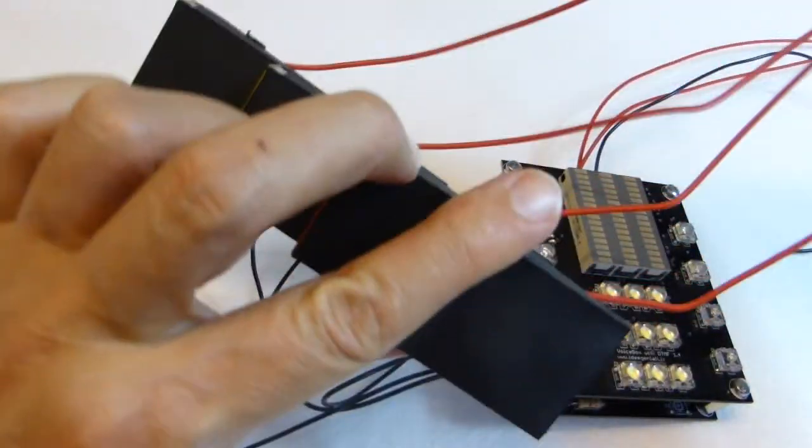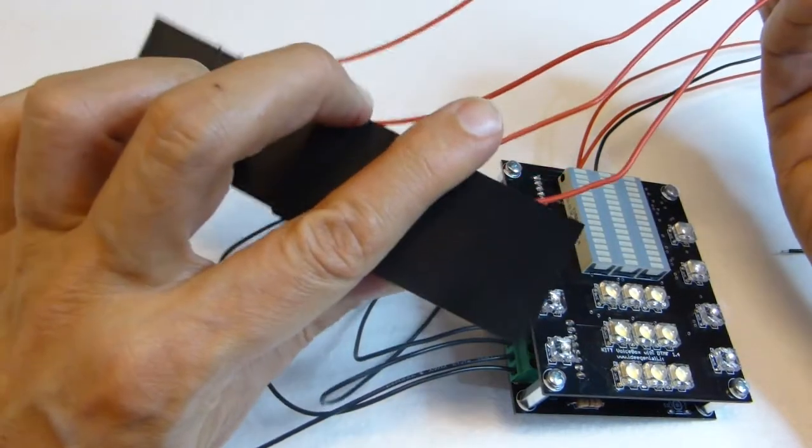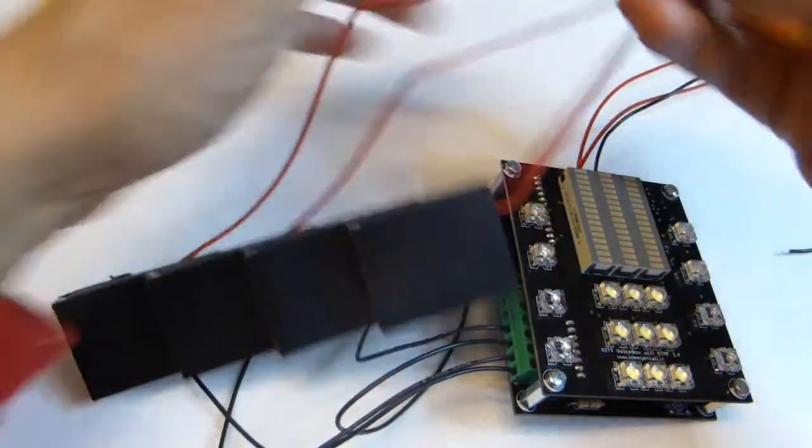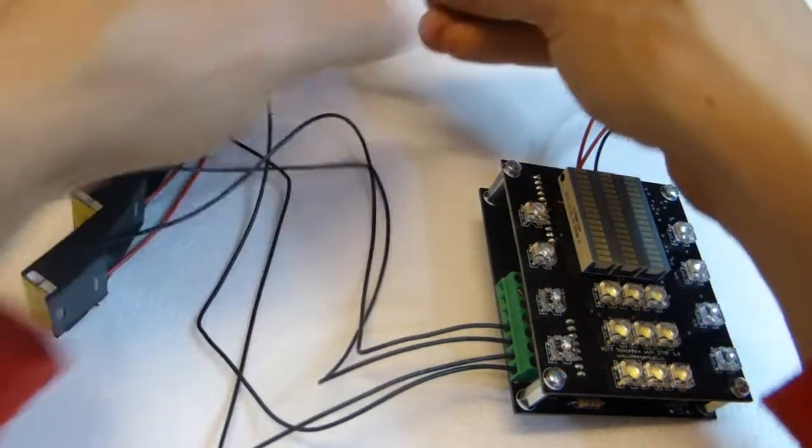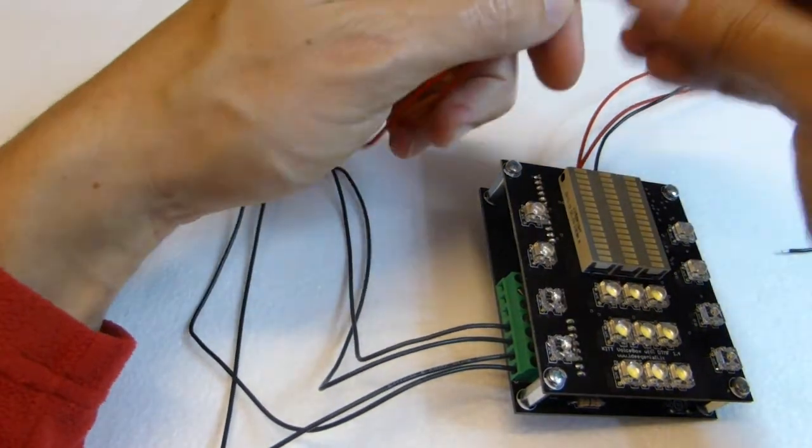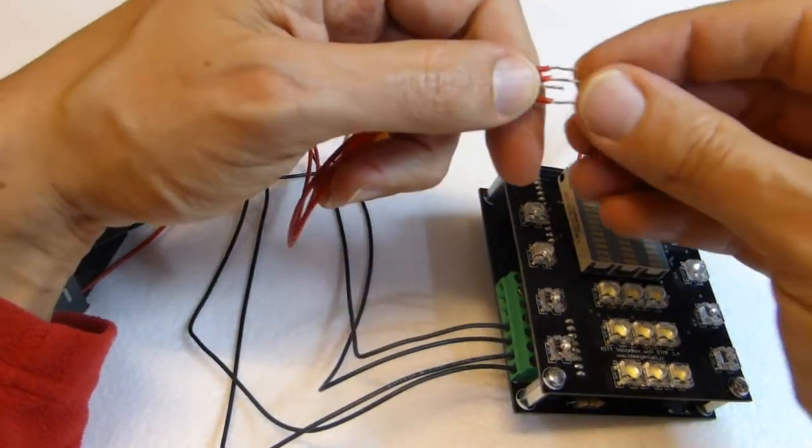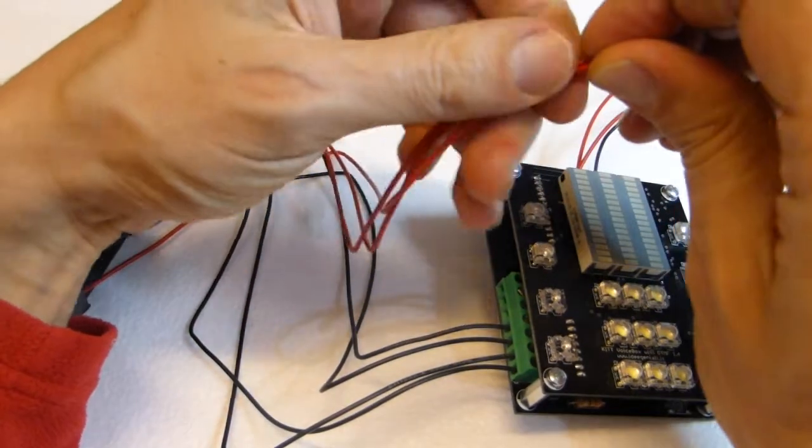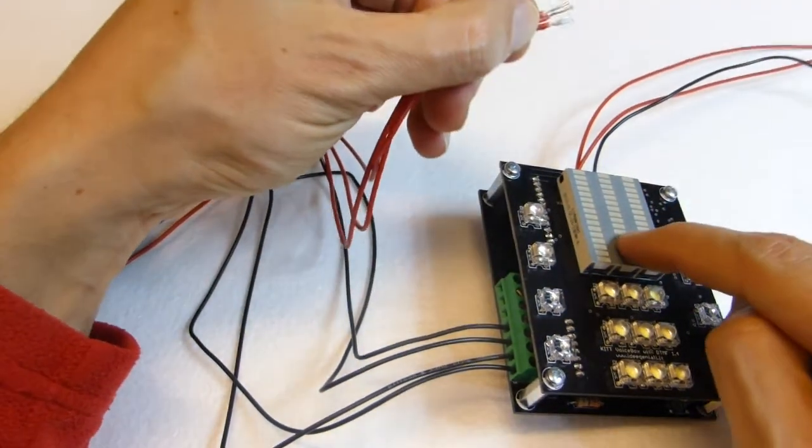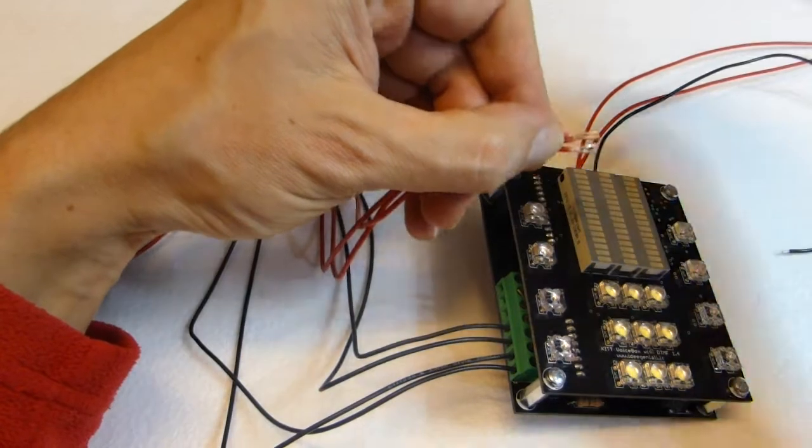Then we have all these red wires here. This must go to plus 12V, all together. It's four wires, and must be tied to the same power supply as the voice box and not to another supply.